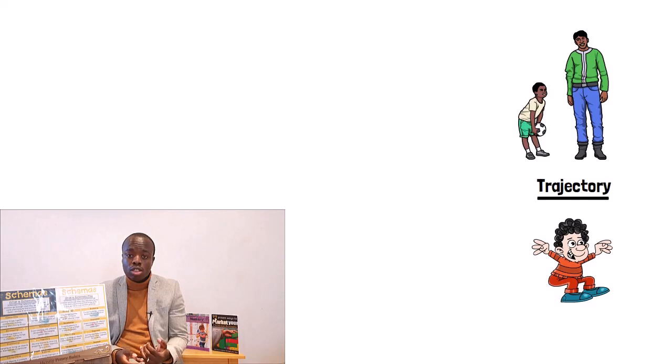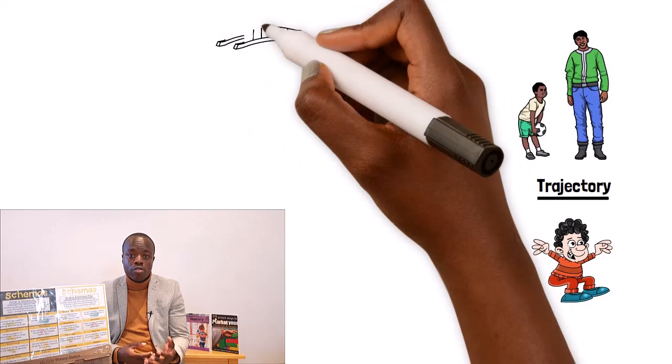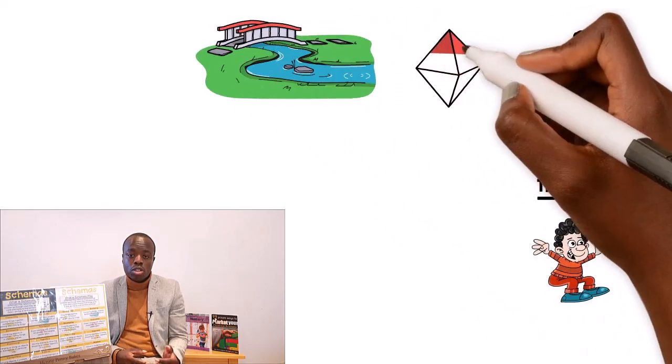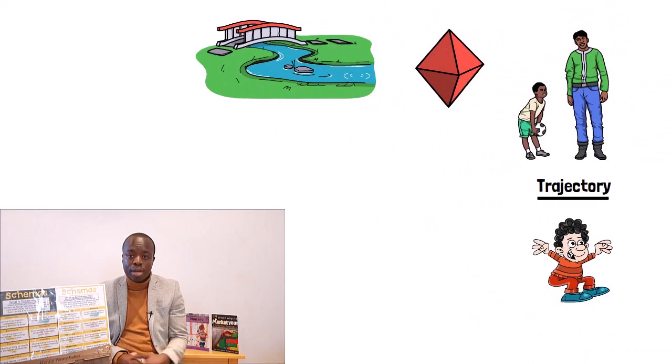A common theme with slightly older children, like children that are toddlers and preschool age, is a fascination with running water. As they get even older, they may explore the use of lines and shapes within their drawings and mark making.